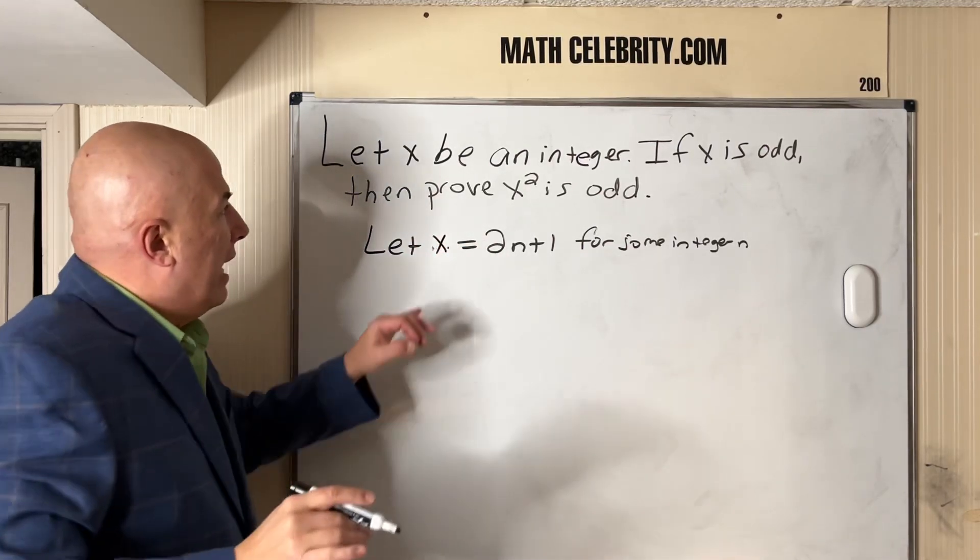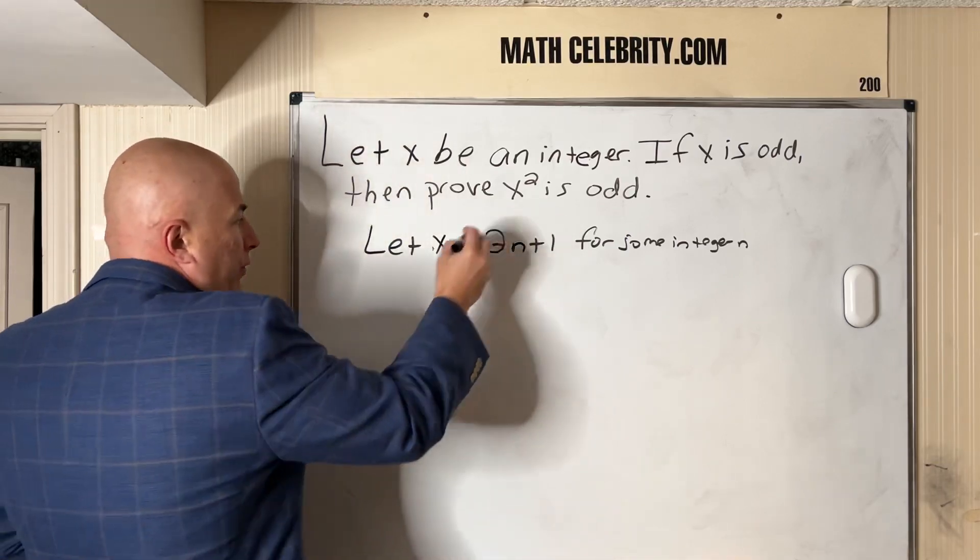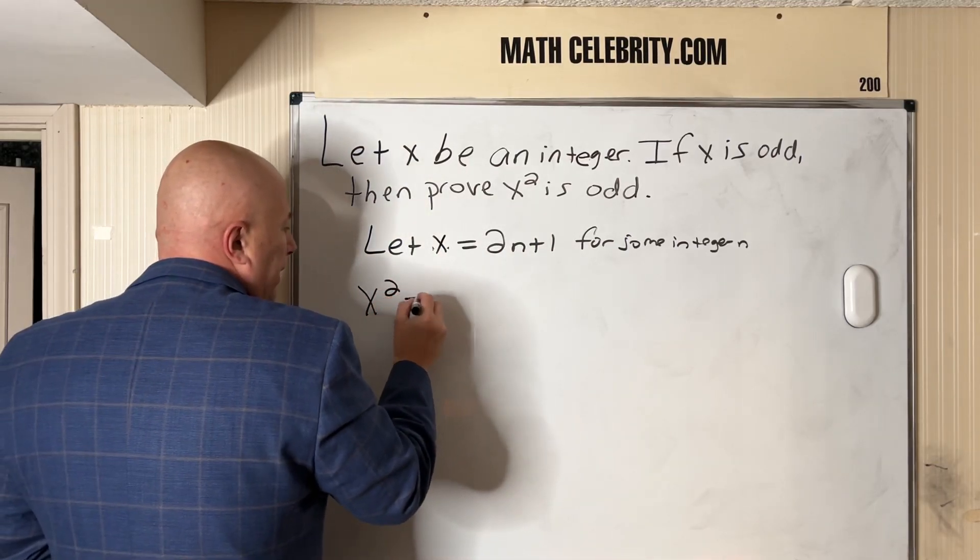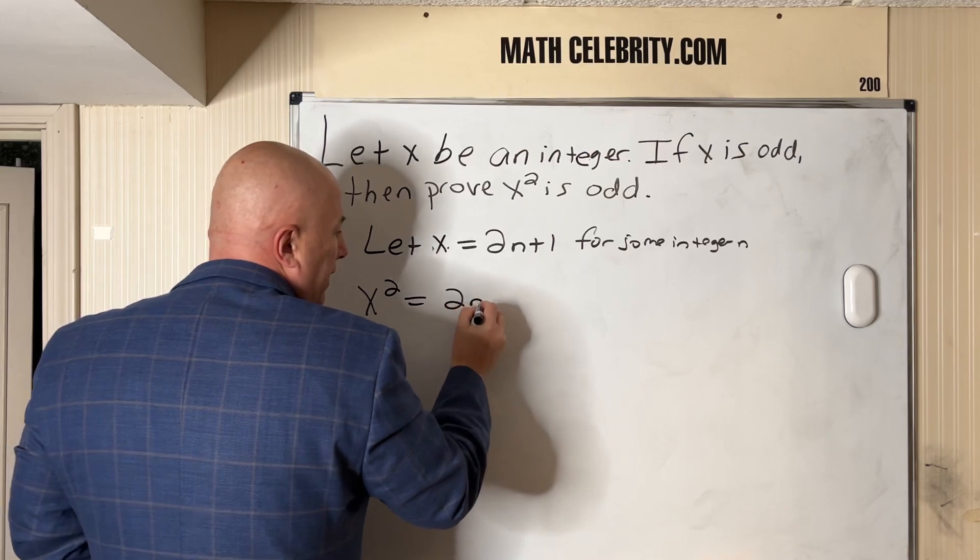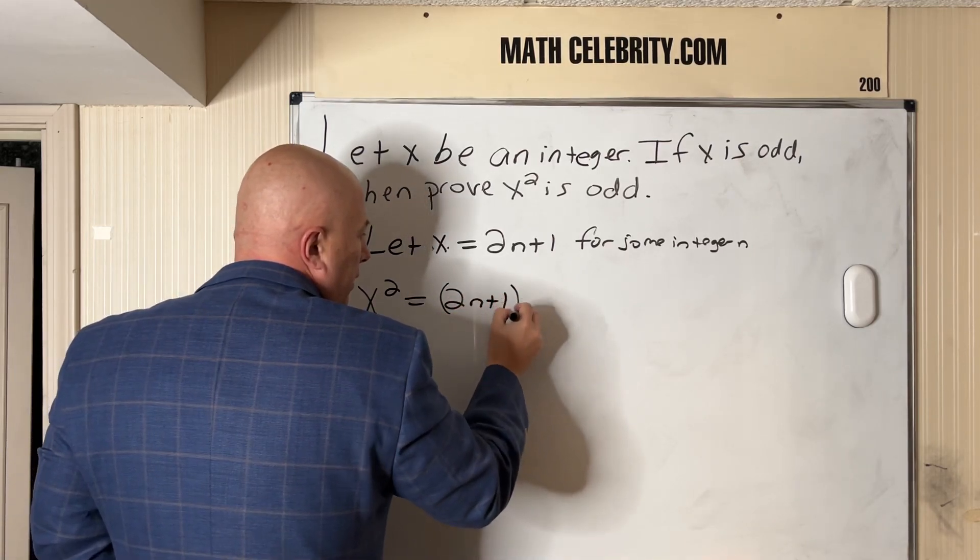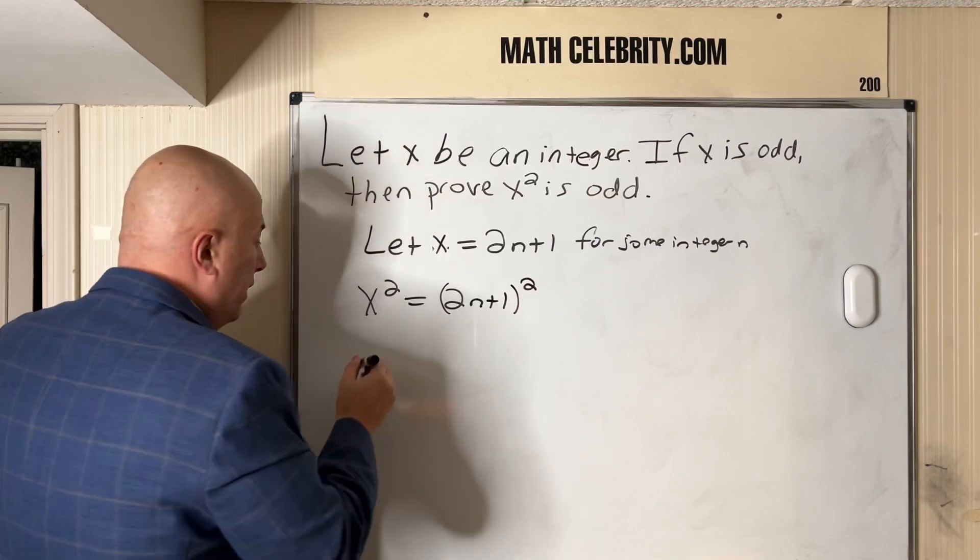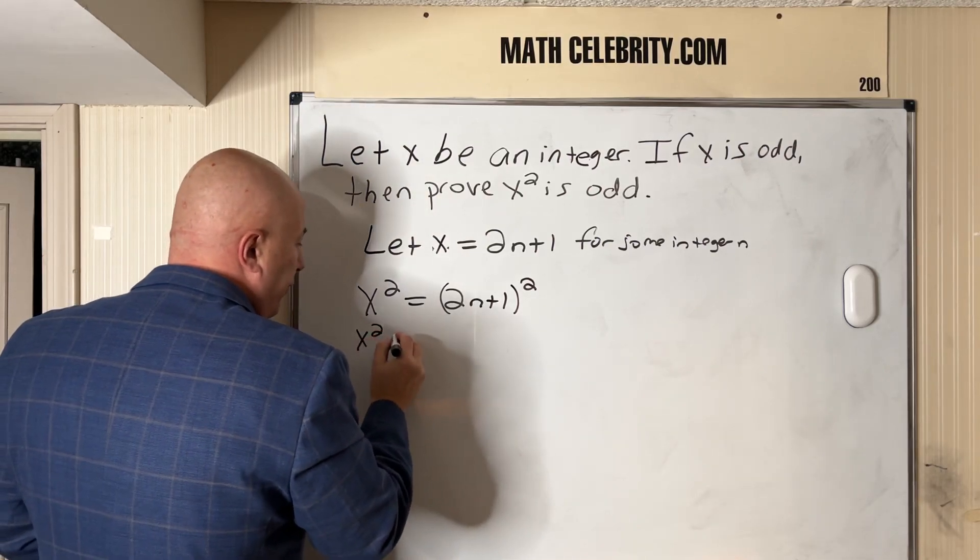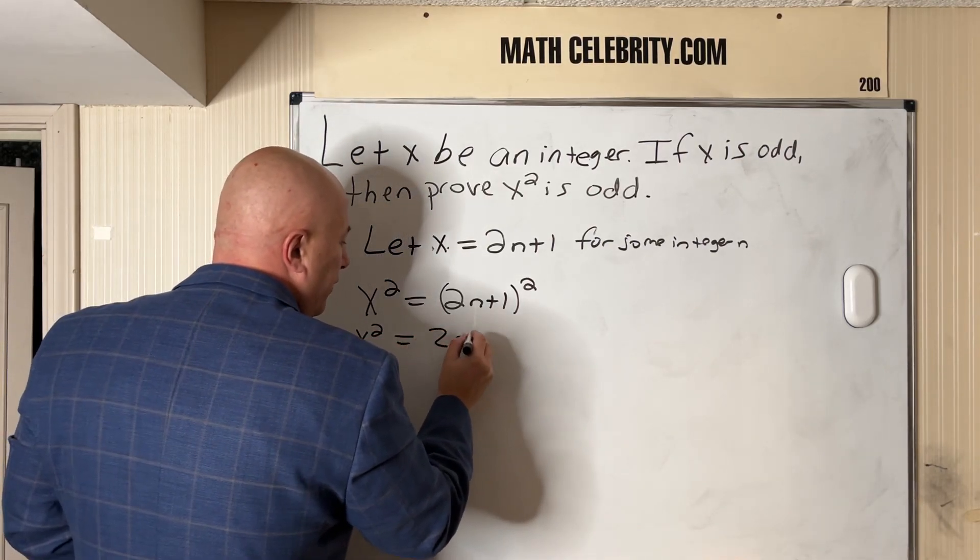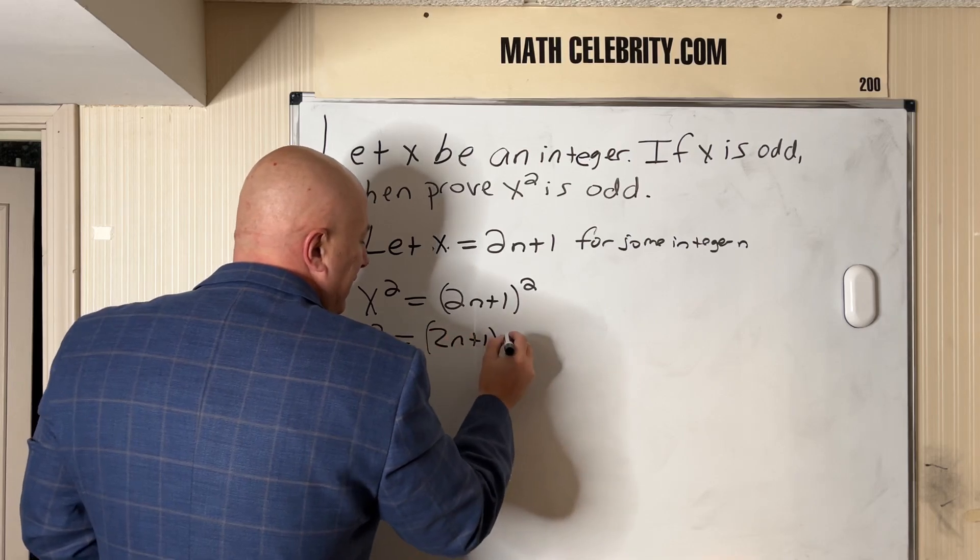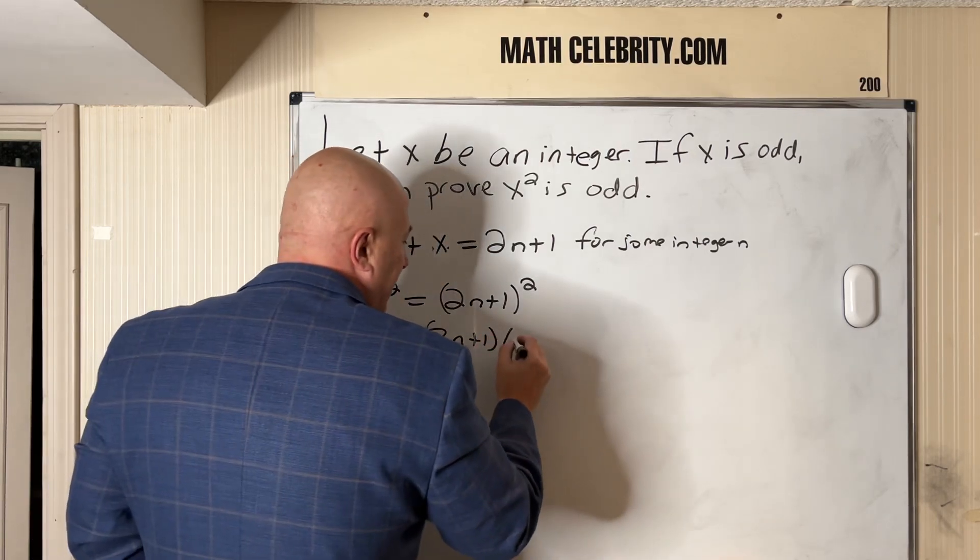Now we want to prove x² is odd. So if we square x, we get (2n+1)². Now we're going to do FOIL. For those of you that don't know, FOIL is first, outside, inside, and last.